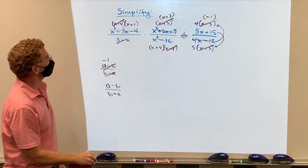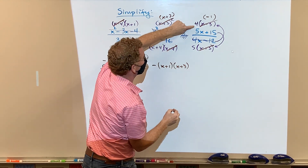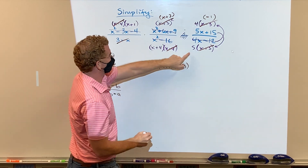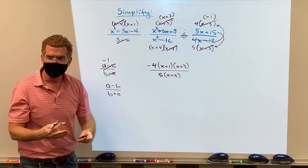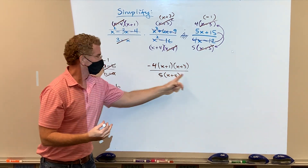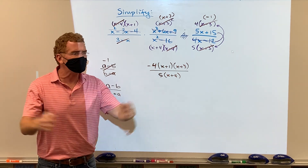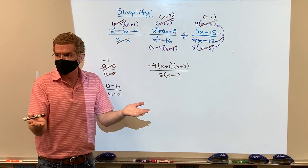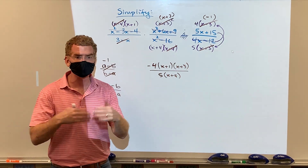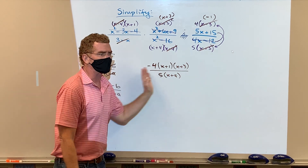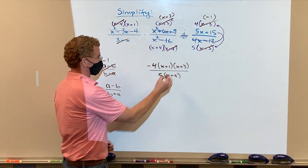After canceling, I have a negative, an x plus 1, and an x plus 3 in the numerator, and a 4 — so negative 4 — and in the denominator a 5 and an x plus 4. Even though technically simplify means multiply and clean it all up, we're going to leave it like that. Since this is already factored, we're not going further. If you bother to multiply all that out, I'm not even going to look at it.